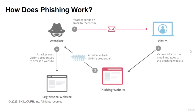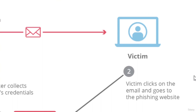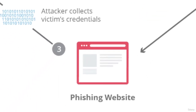Now let's see how phishing actually works. The first thing an attacker will do is send you a phishing email or message that contains a phishing link. Once the victim opens this email and clicks on the link, it will redirect to the phishing page. A phishing page could be any website — it could be a fake Facebook page if they want to hack your Facebook account, or a fake Gmail or LinkedIn page, depending on what information the attacker wants to access.